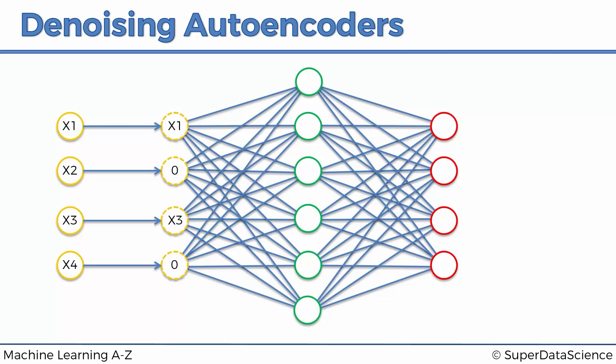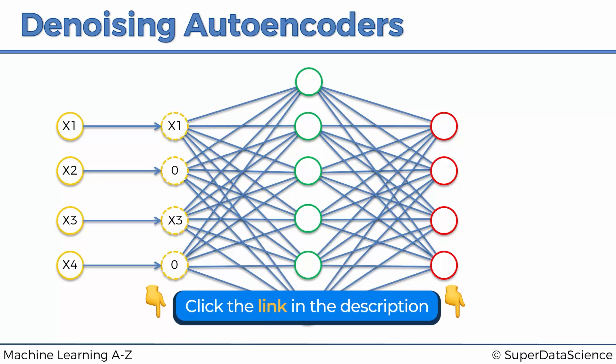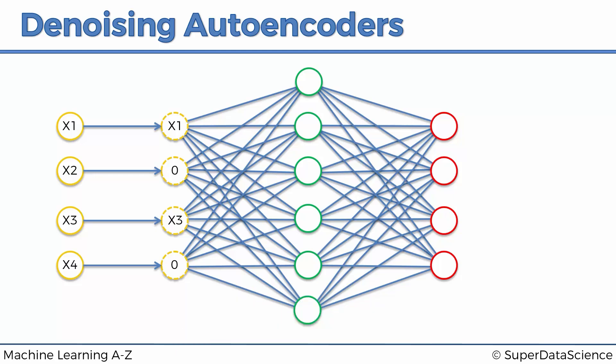And it's a parameter you can specify in the setup of your autoencoder. It can be, for instance, half of your inputs that you have are turned into zeros every single time. And it happens randomly. So at every single pass, it can be different variables.